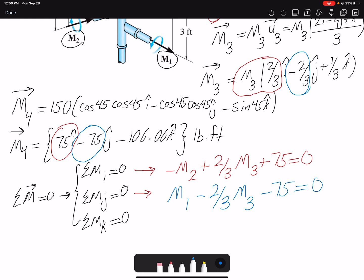And then finally we have the k component. We use the same approach, write the component: 1/3 of M3 minus 106.06 equals zero.